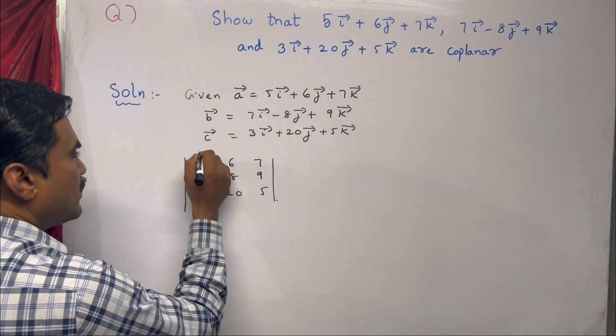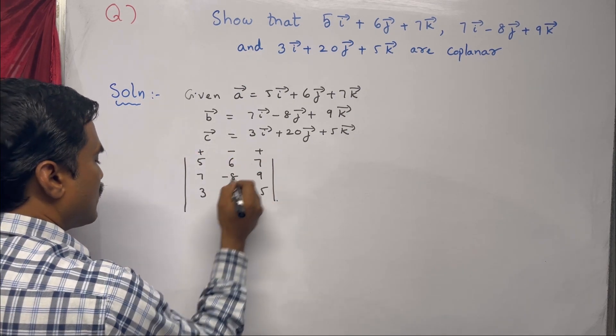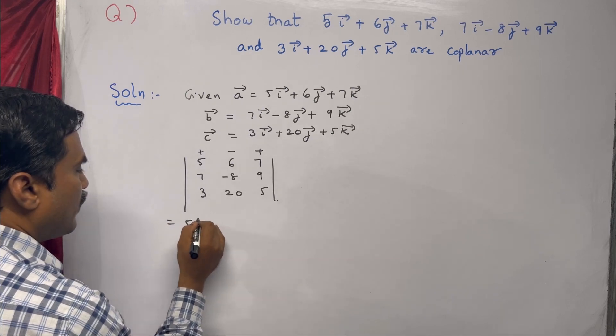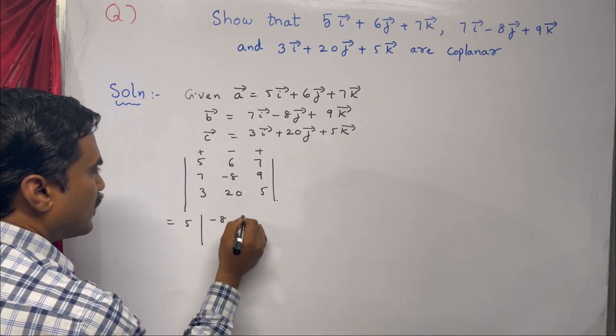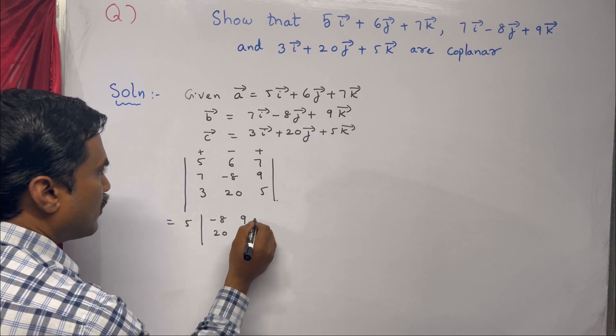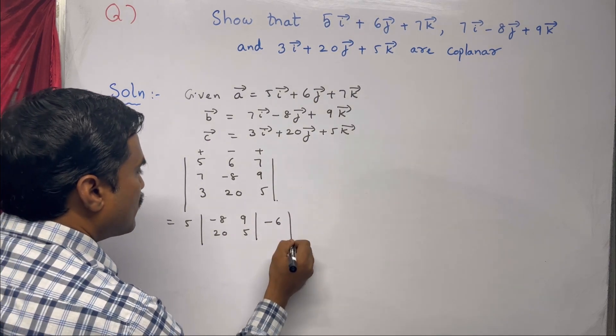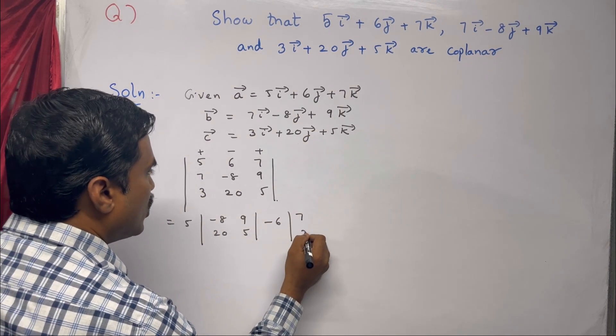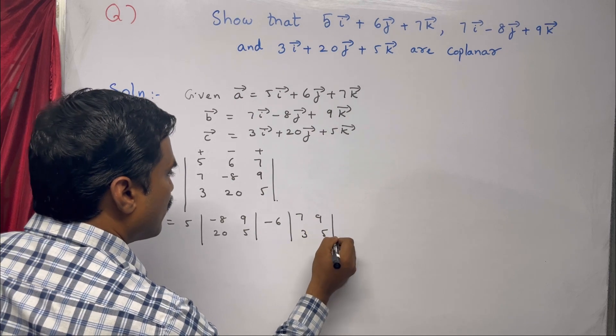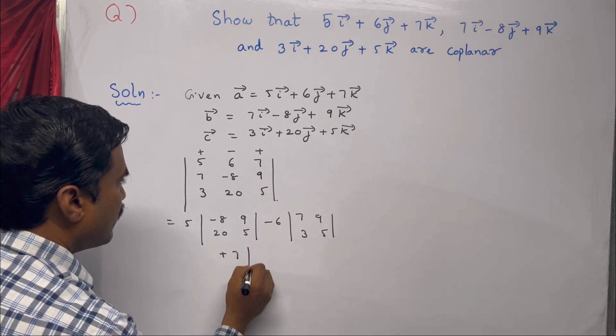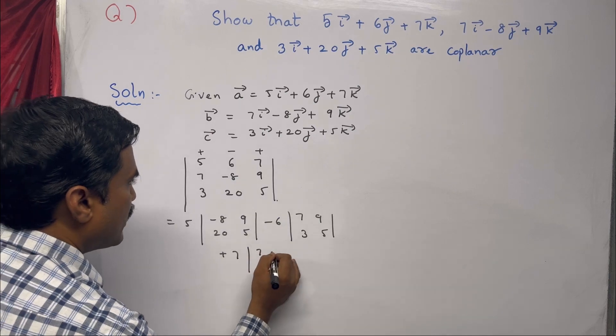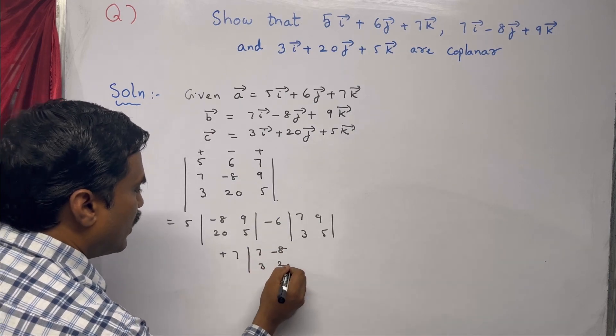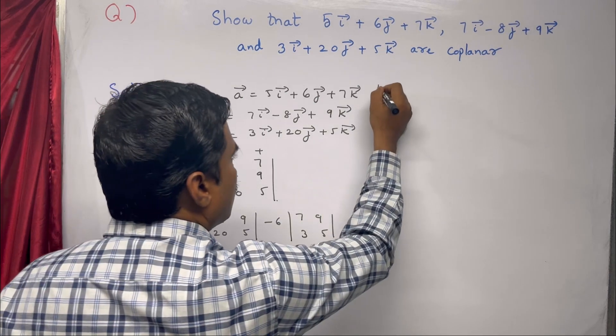To solve this determinant using the plus-minus-plus pattern, this equals 5 times the minor (-8, 5; 9, 20), minus 6 times the minor (7, 9; 3, 5), then plus 7 times the minor (7, -8; 3, 20).